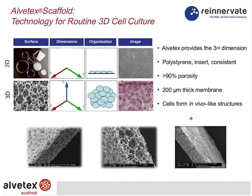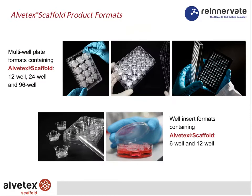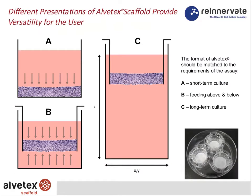It's only 200 microns thick, and it's not necessary to fill the entire scaffold — 3D culture can be achieved just in the top layers. These are the products currently available: we have a plate format and an insert format — 12, 24, and 96 well plates, with 3×4 well under development, and 6 and 12 well inserts. We spend a lot of time studying how the presentation of the scaffold is important, which has enabled us to optimise the technology, create new opportunities, and demonstrate versatility and flexibility.